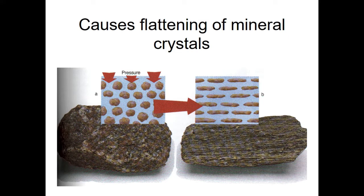As studied previously, pressure is of two types: uniform pressure and directed pressure. Uniform pressure acts equally from all sides. Directed pressure acts from a particular direction — for example, from top and bottom, or from the right and left side. In that case, the mineral grains will get reoriented in the direction of the pressure.